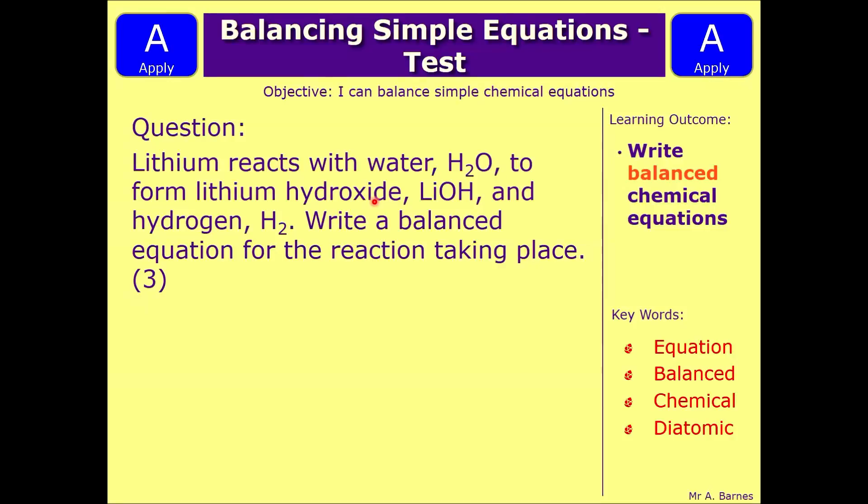Right, let's have a look at a practice question then. So here it says we've got lithium reacts with water H2O to form lithium hydroxide LiOH and hydrogen H2. Write a balanced equation for the reaction taking place. So what I would like to do is pause the video now and actually have a go at the question. When you're done we'll have a look through the answers and unpause the video.